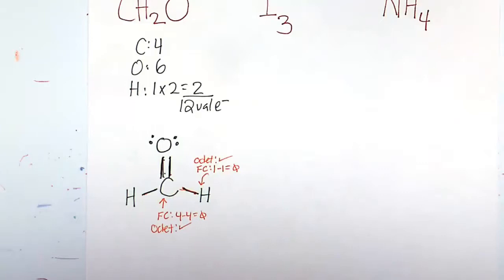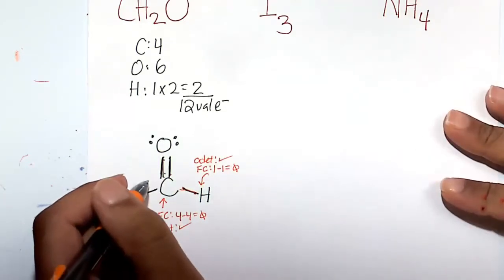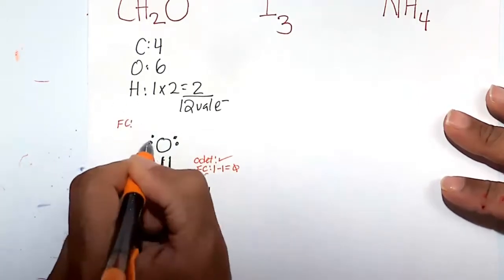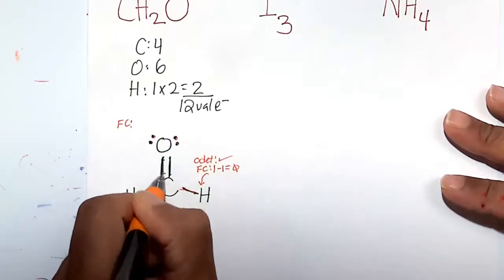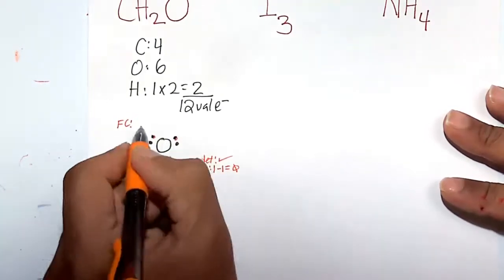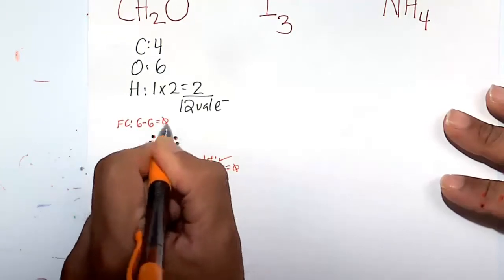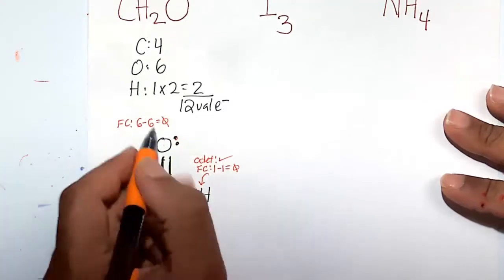There's a lot of leeway with that octet rule, so formal charge minimization is what you want to look for. And let us look at the oxygen now. Formal charge, which is most important: 1, 2, 3, 4, 5, 6. Happy. Oxygen is happy at 6. There's 6 around it. 6 minus 6 is 0. So the formal charge of that oxygen atom is 0.